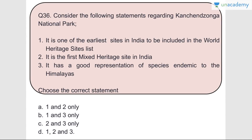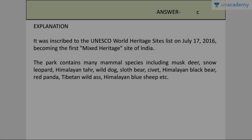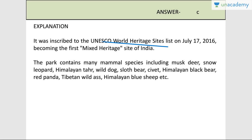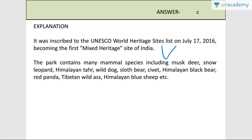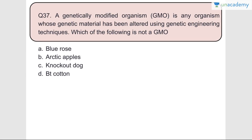Question number thirty-six: Consider the following statements regarding Kanchenjunga National Park. Statement one - it is one of the earliest sites in India to be included in World Heritage Sites - wrong. Statement two - it is the first mixed heritage site in India - correct. Statement three - it has a good representation of species endemic to the Himalayas - correct. Answer is C, two and three. It was inscribed as a UNESCO World Heritage Site recently, becoming the first mixed heritage site of India. The park contains many mammal species including musk deer, snow leopard, Himalayan tahr, wild dog, sloth bear, red panda, and Himalayan blue sheep.